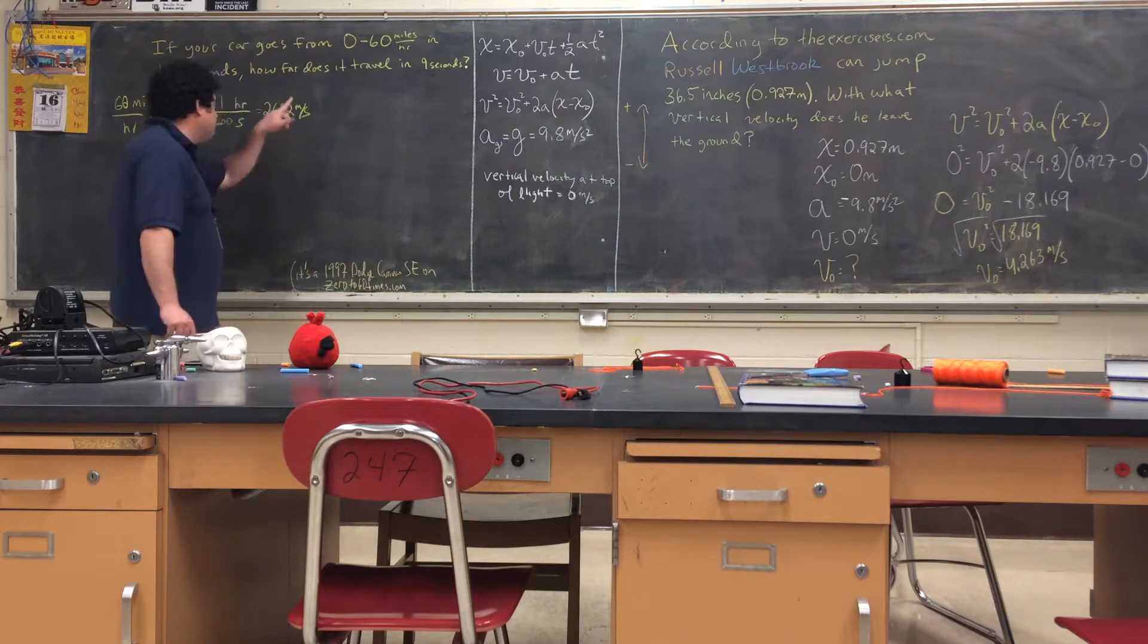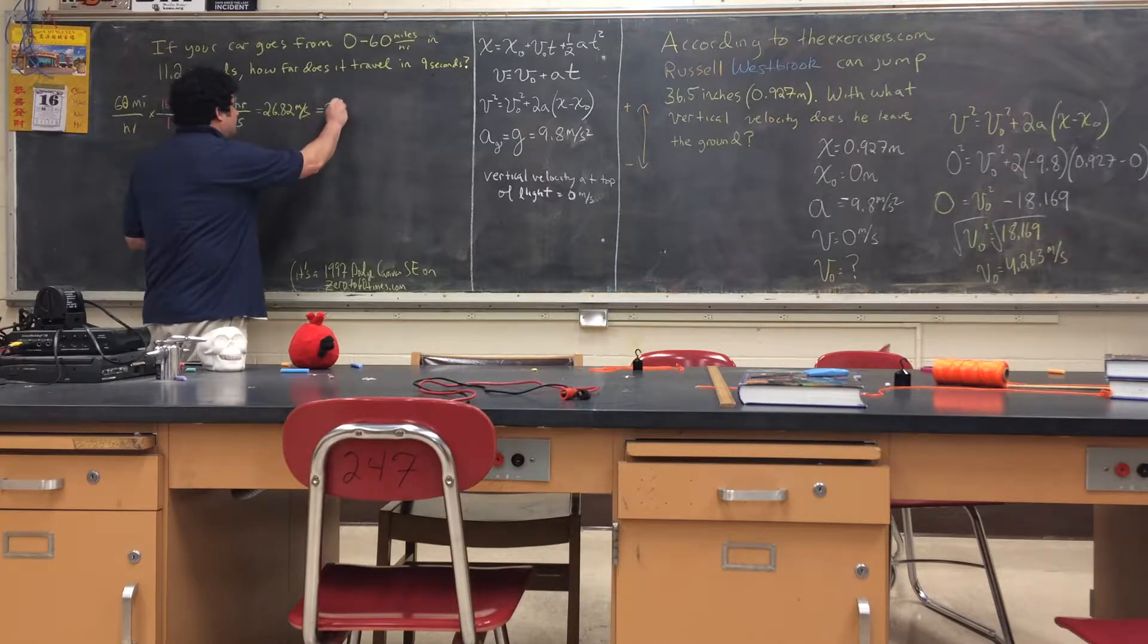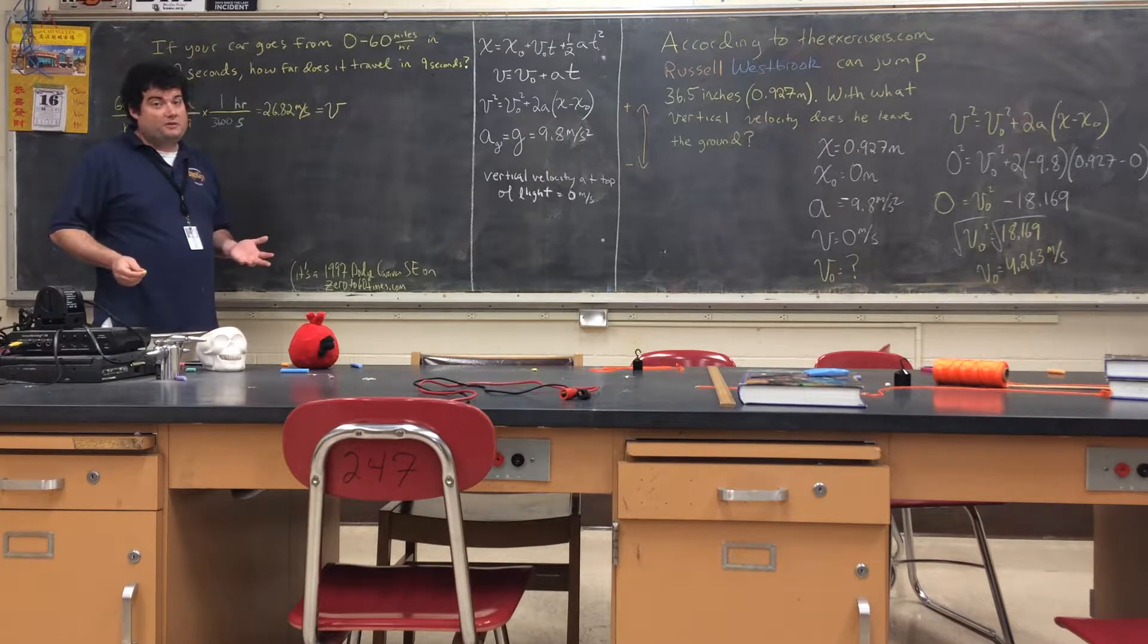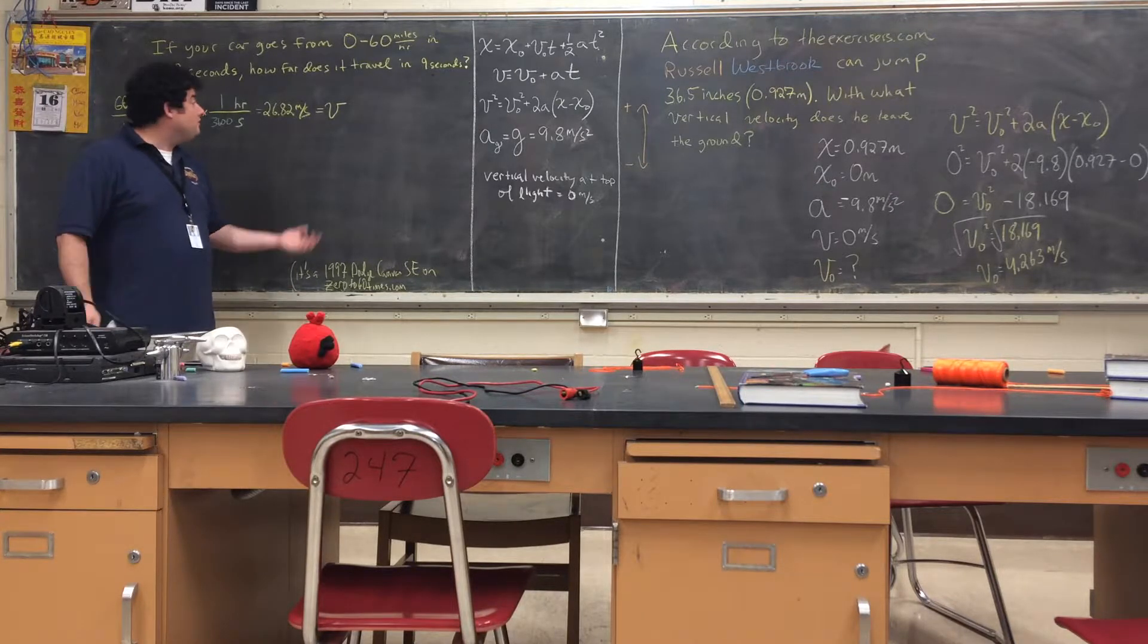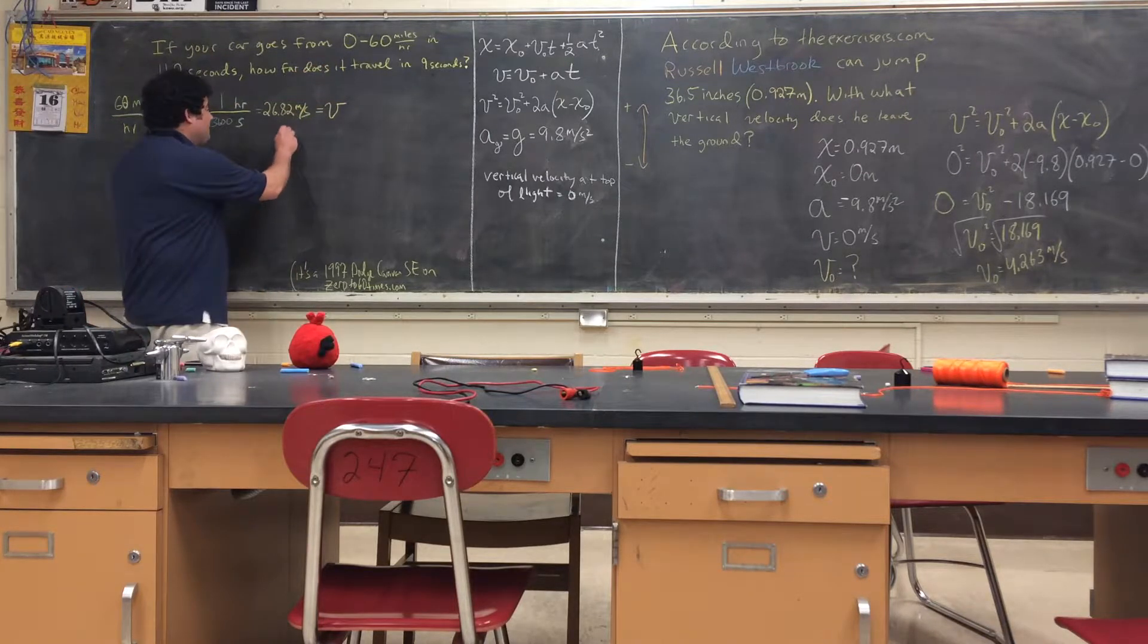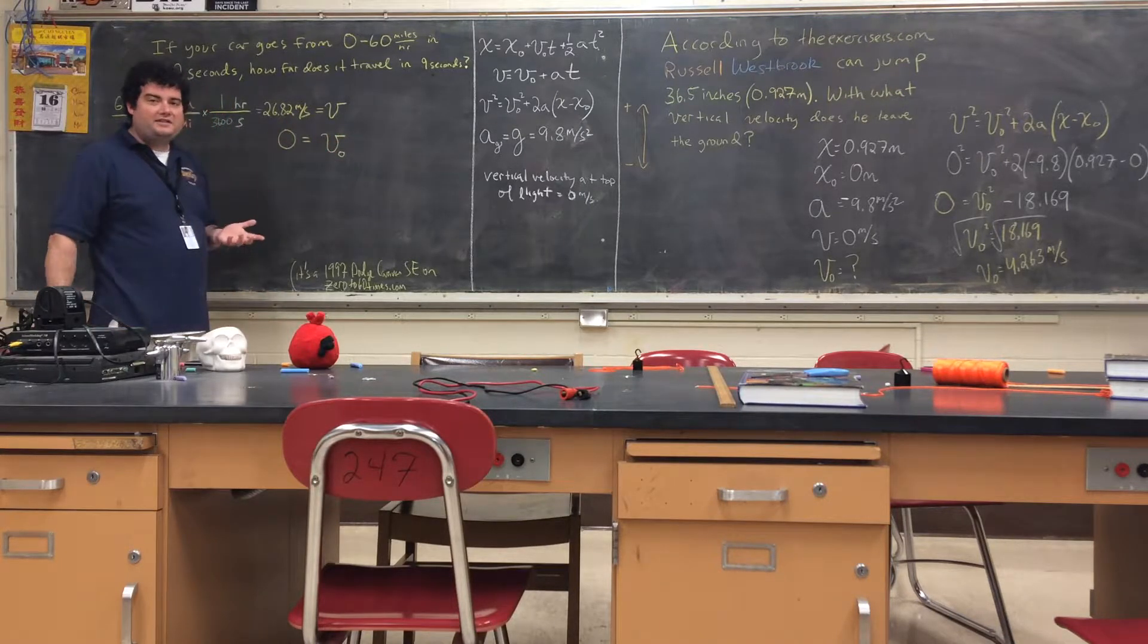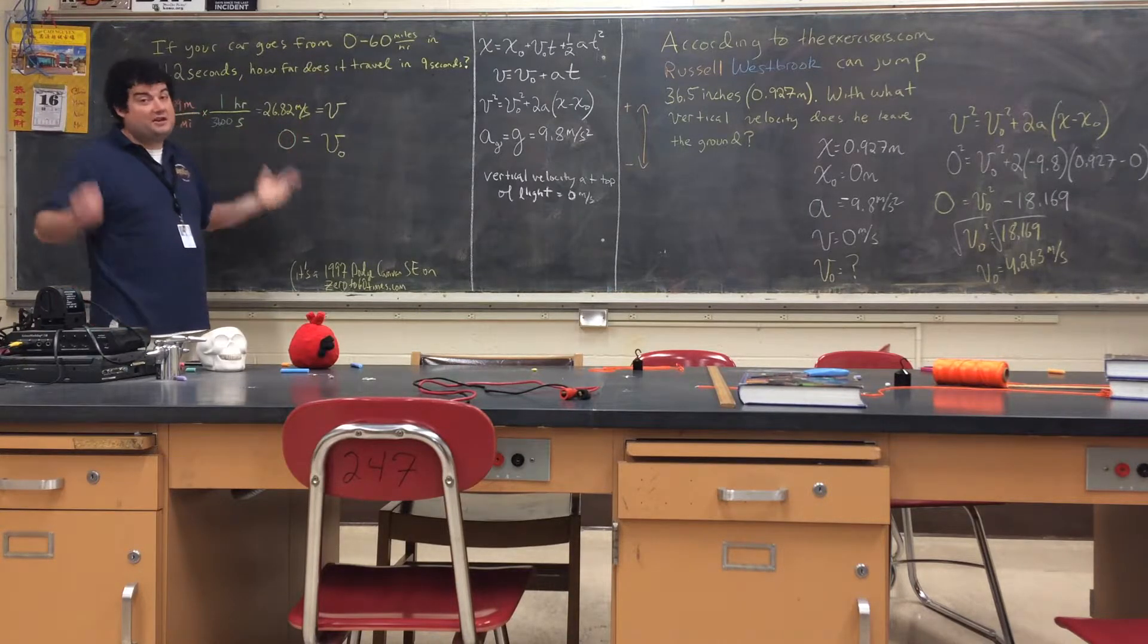We know 26.82 meters per second is a velocity. So is it the velocity the car ends up with, or is it the velocity it starts with? I think it's pretty obvious that it's the velocity the car ends up with, so we're going to call it V. The car is starting at zero, so that means zero is our velocity original. Now how did I know this was velocity? It's pretty easy to guess, but you could also use the units as a clue. Meters per second has got to be velocity.